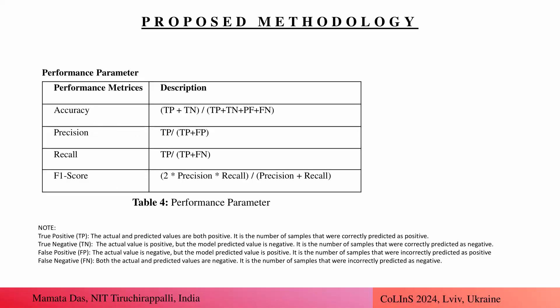We have already mentioned the nine models used. These are the parameters used to obtain the results and accuracy of our work. For comparison, we used four performance metrics: accuracy, precision, recall, and F1-score. Here we can see the definitions of TP, TN, FP, and FN, which are noted under the table.